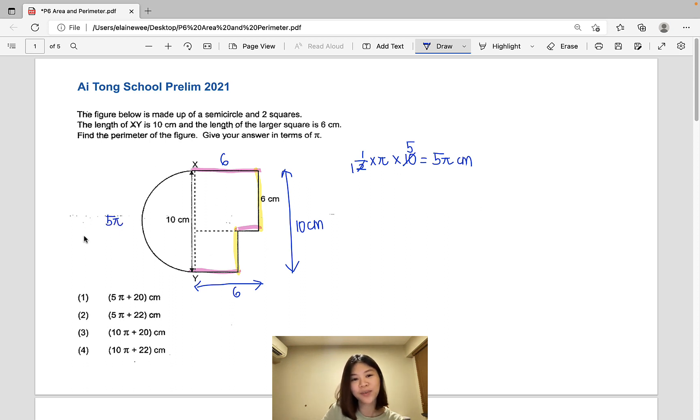Now all we have to do is to add everything up. So 5 pi plus 6 plus 6 plus 10, that would give us 5 pi plus 22 cm. And that's our answer to this question, option number 2.